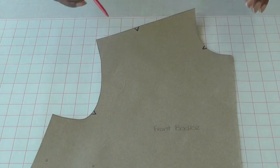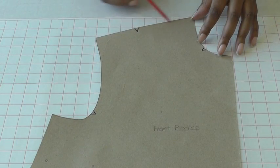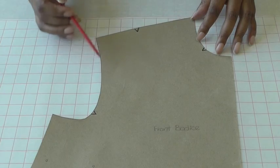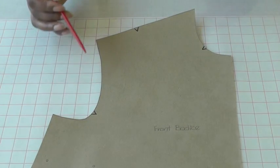Here I have a basic bodice with a regular shoulder line and a regular armhole, and these are the areas that I'm going to show you how to adjust.